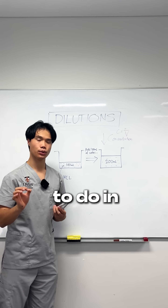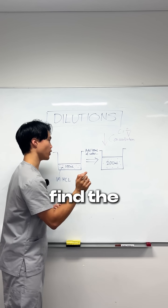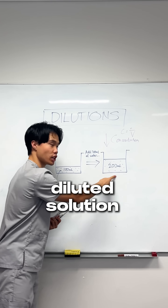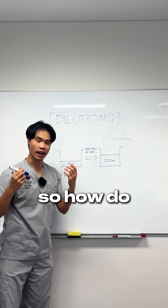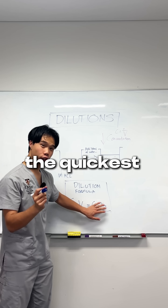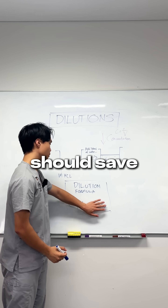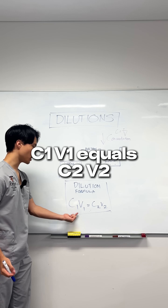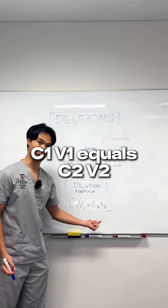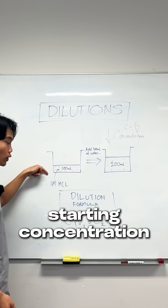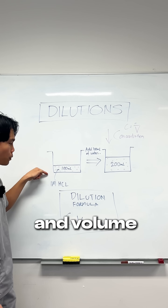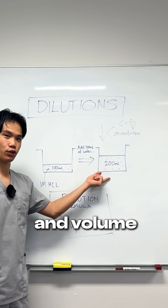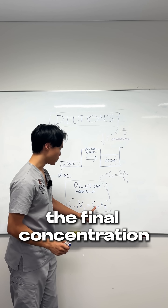What you'll get asked to do in your exam is to find the concentration of this new diluted solution. The quickest way — one you should save for later — is the dilution formula: C1V1 = C2V2. C1 and V1 are the starting concentration and volume, and C2 and V2 are the ending concentration and volume.